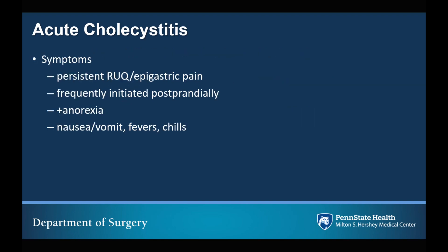These patients present with symptoms of persistent right upper quadrant or epigastric pain. Frequently, patients will describe an antecedent history of fatty foods or a meal before the pain came on. As you talk to them, they endorse anorexia in addition to nausea and vomiting. And since this is an infectious process, they'll endorse fevers and chills.